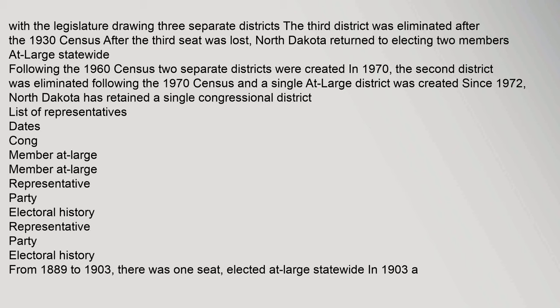After the third seat was lost, North Dakota returned to electing two members at-large statewide. Following the 1960 census, two separate districts were created. In 1970, the second district was eliminated following the 1970 census and a single at-large district was created. Since 1972, North Dakota has retained a single congressional district.